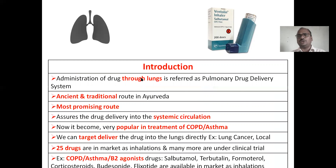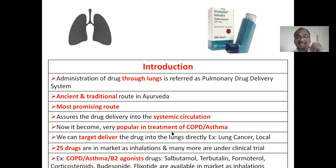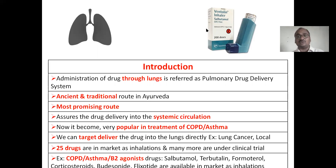Introduction to pulmonary drug delivery system: delivery through the lungs is called pulmonary drug delivery. This is also an ancient and traditional route in Ayurveda — a most promising route for systemic circulation. It is very popular for treatment of asthma and COPD, and is the only option in those cases. We can also target lung cancer by delivering anti-cancer drugs directly to the lungs. Twenty-five drugs are already available in the market through the pulmonary route.